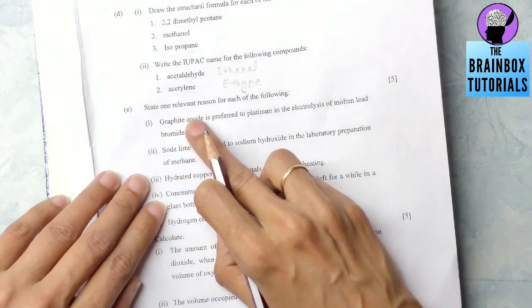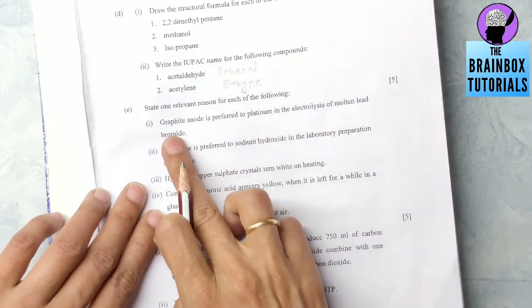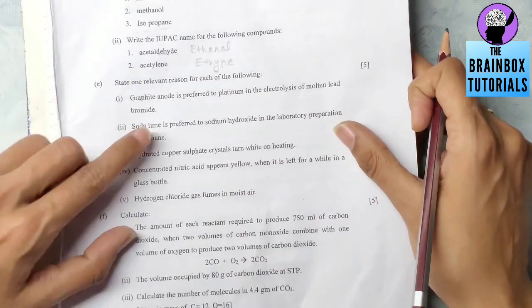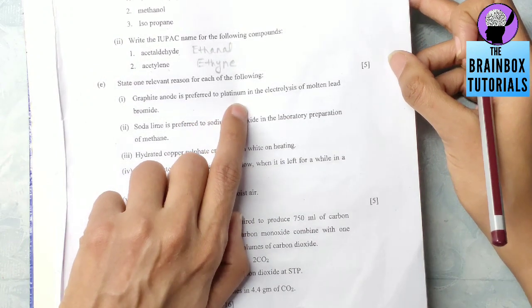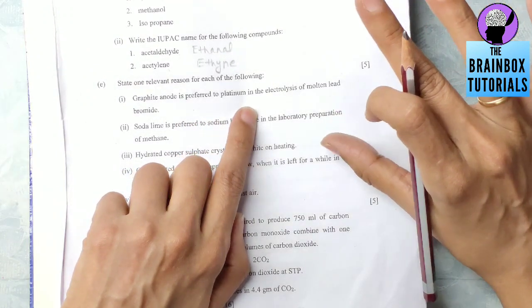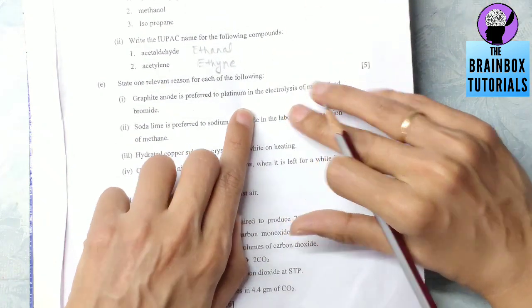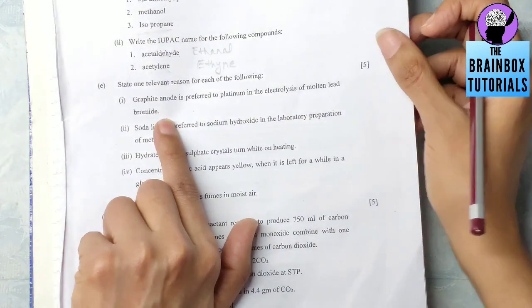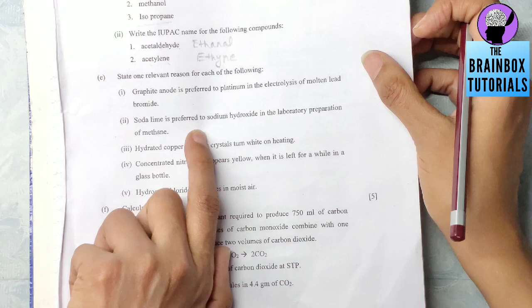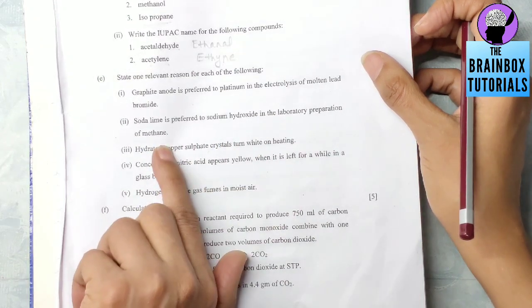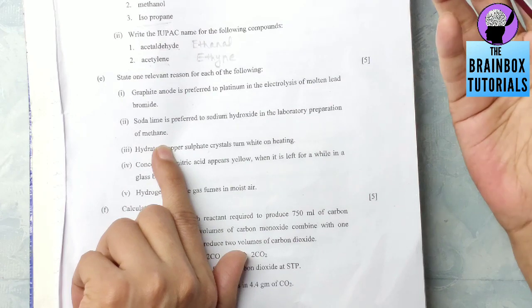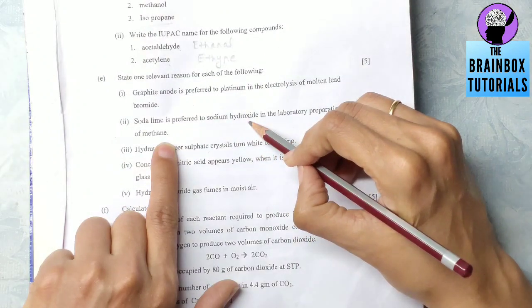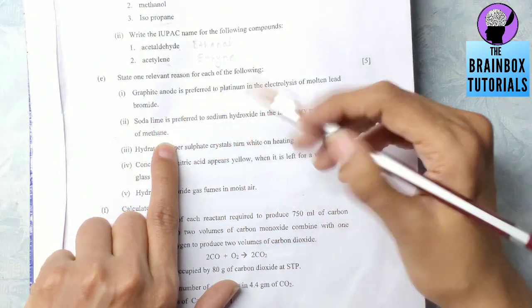Part E: State one relevant reason for each of the following. Graphite anode is preferred to platinum in the electrolysis of molten lead bromide. Graphite anode is preferred to platinum because it is not affected by the corrosive or reactive bromine vapors. Number two: soda lime is preferred to sodium hydroxide in the laboratory preparation of methane. There were two reasons, you can write any one. Either you write that sodium hydroxide is deliquescent, that is why soda lime is preferred, or you can also write that soda lime does not affect the glass hard glass tube.